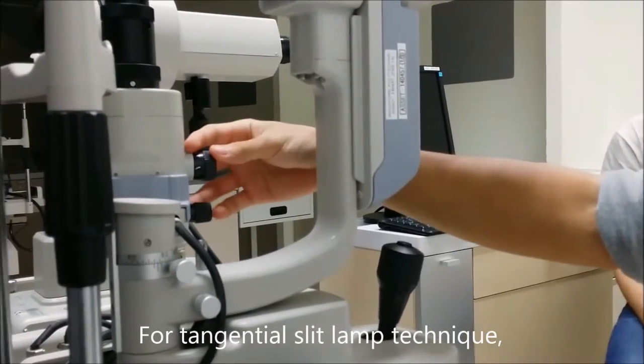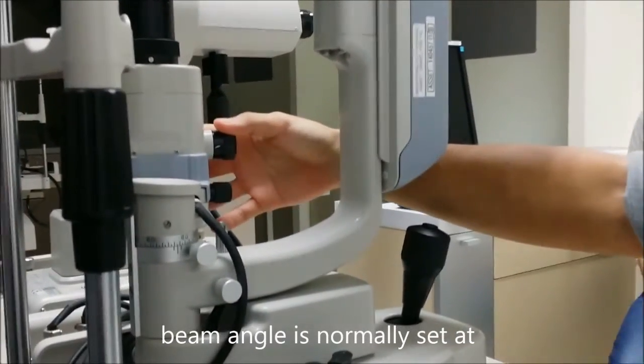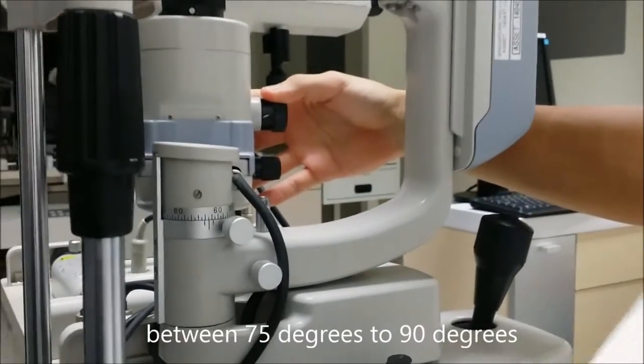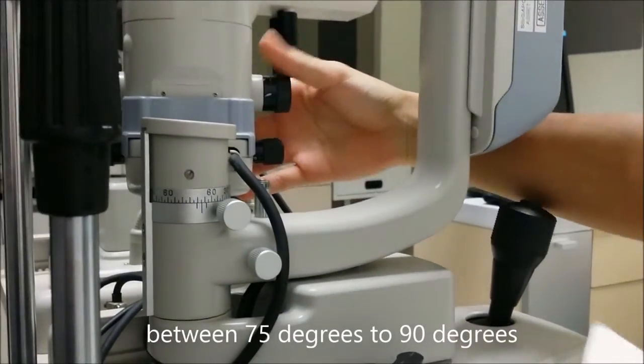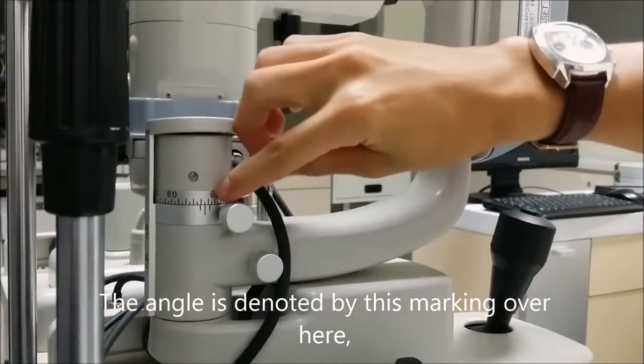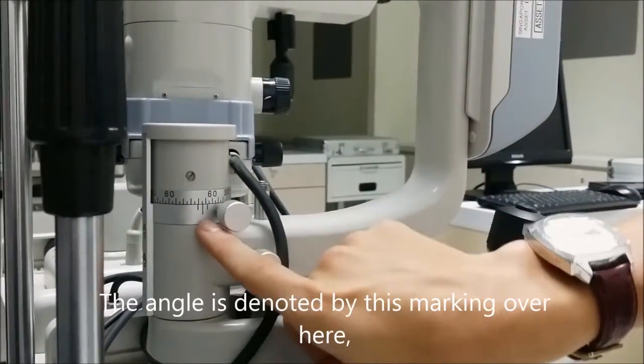For tangential steep length, the beam angle is normally set between 75 degrees to 90 degrees. The angle is denoted by this marking over here.